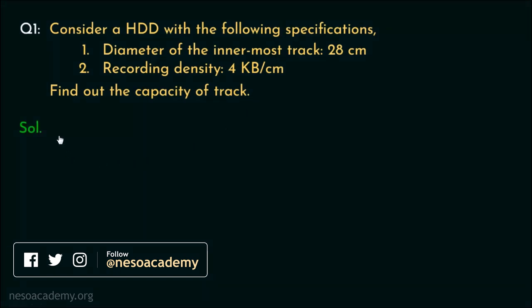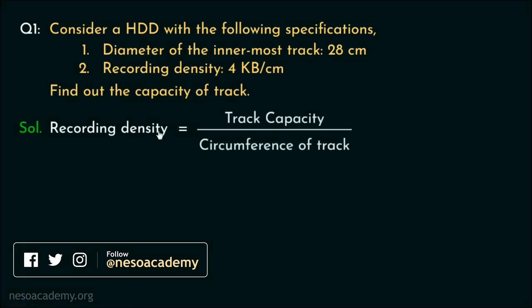During the previous session, we learned that recording density is track capacity upon circumference of the track. In the specifications, we have been provided with the recording density and the diameter of the innermost track using which we can find out the circumference of the track. So from this equation, we can easily find out the track capacity.